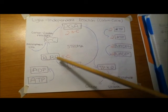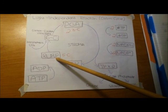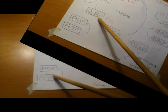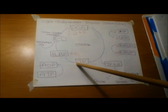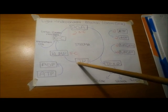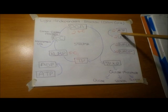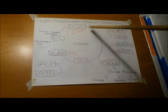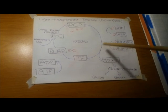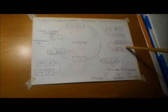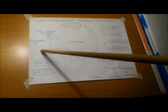Then 10 triose phosphates are used to make more RuBP. ATP helps the 10 triose phosphates form RuBP molecules, and then the cycle begins again. Overall, you need 18 ATPs and 12 NADPH — if the cycle were to go on six times — to fix six CO2 molecules and produce one glucose.